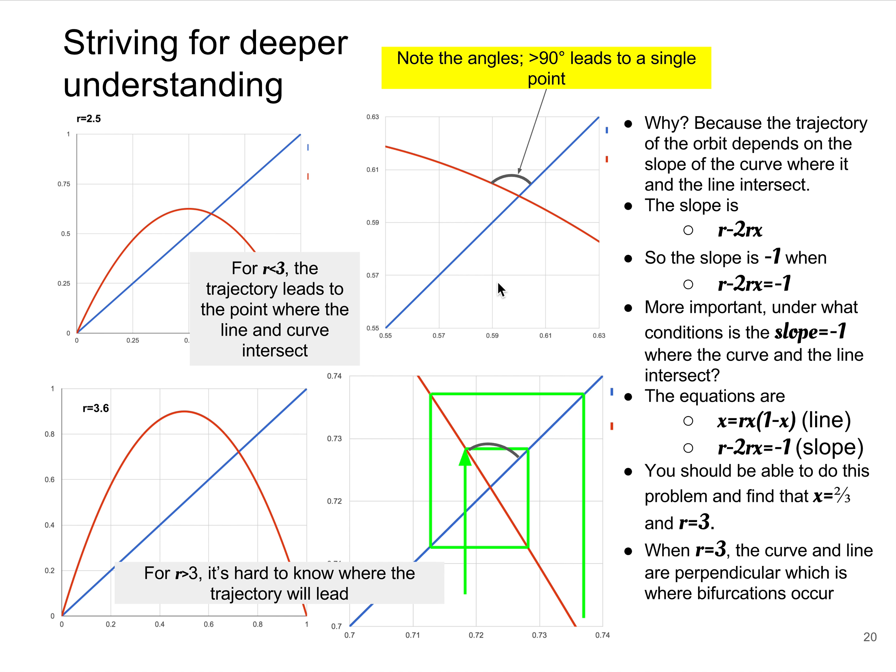That's the critical point that determines where that first bifurcation occurs. Those of you who want to study this problem in more detail will see this type of calculation done for the next bifurcation, where you go from two values to four values. You do a similar kind of analysis, except you will not be using the slope of the curve. And so the math gets a little more complicated as you try to find the values for bifurcation as a function of the r value. Now, we're not going to do that in this lecture. So this tells us that r equals 3 is a special case, and we're going to explore that as we go on.